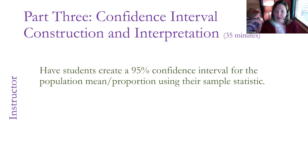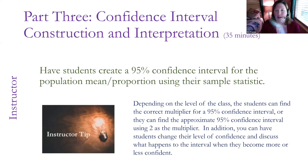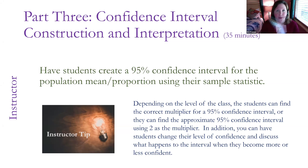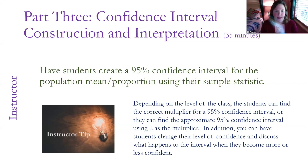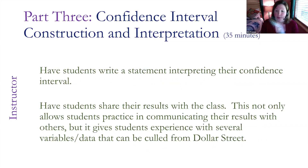I have students create a 95% confidence interval for their sample statistic. With my undergraduate TAs in my pilot study, we talked about the multiplier for a 95% confidence interval, as they had a bit more understanding of where that comes from. For students who aren't ready for that yet, we just use two as our 95% multiplier and don't talk about 1.96. I also have students change their level of confidence so they can see what happens to their confidence interval and begin to see that relationship. Then they write a statement about their interpretation and share the results with their class, which allows them to hear the creativity their classmates had in thinking about the data in very different ways.